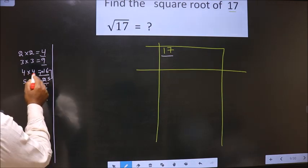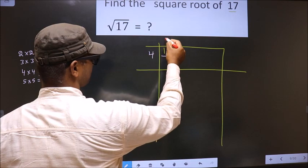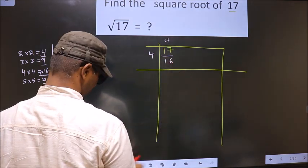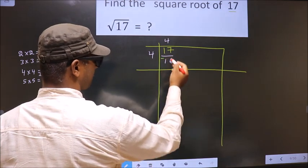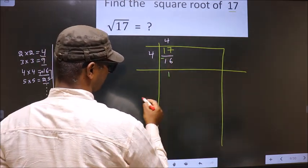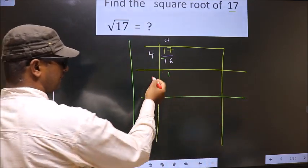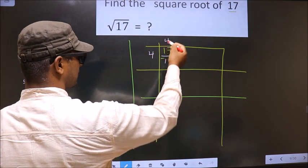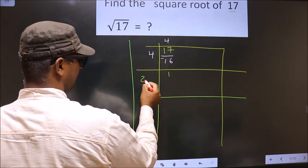4 times 4 is 16. So we take 4 here as the quotient and 4 here as the divisor, giving 16. Now subtract: 17 minus 16 is 1. Now we should add these two numbers and write here — that is, 4 plus 4 is 8.